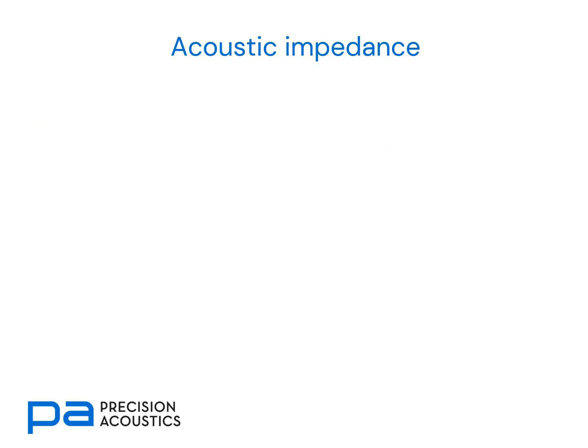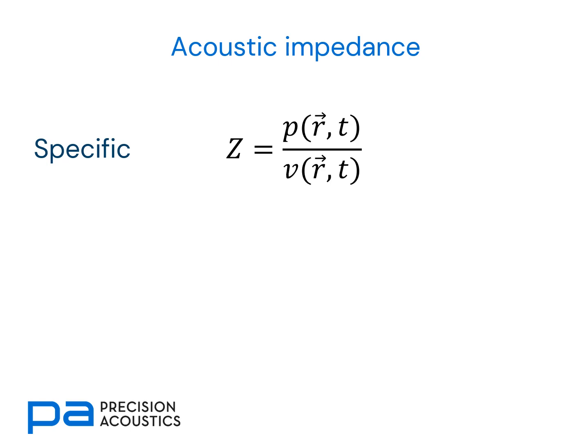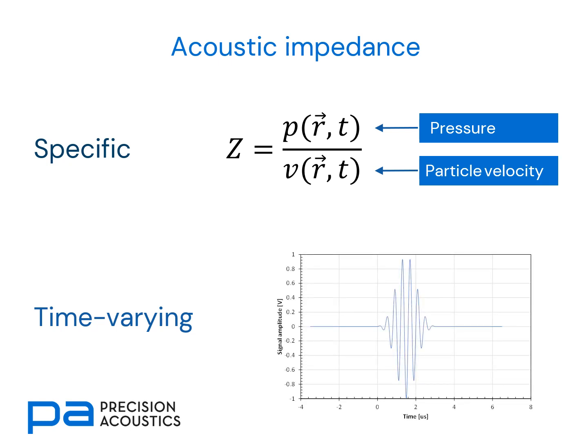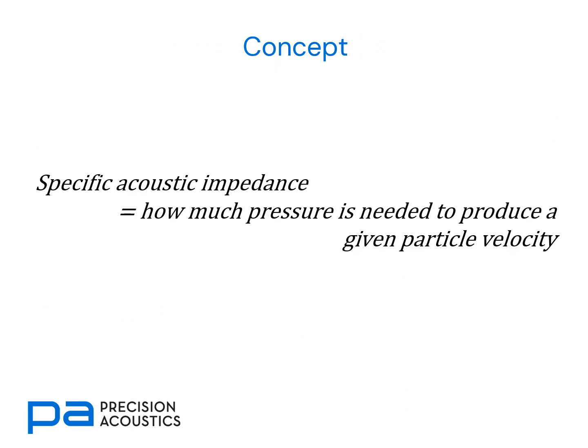Now let's look at acoustic impedance, beginning with specific acoustic impedance. This is expressed as the ratio of pressure to particle velocity. It is a time-varying quantity, and because pressure and particle velocity are both functions of the wave, it expresses the behaviour of the wave itself at a given location and at a given time — it's a wave property. Specific acoustic impedance is a measure of how much pressure is needed to produce a given particle velocity. But because particle velocity is difficult to measure, specific acoustic impedance is equally difficult to determine.